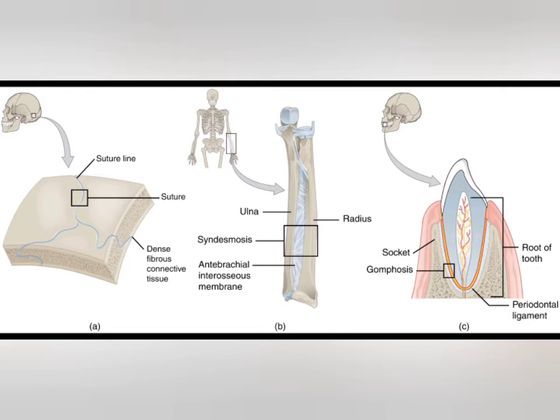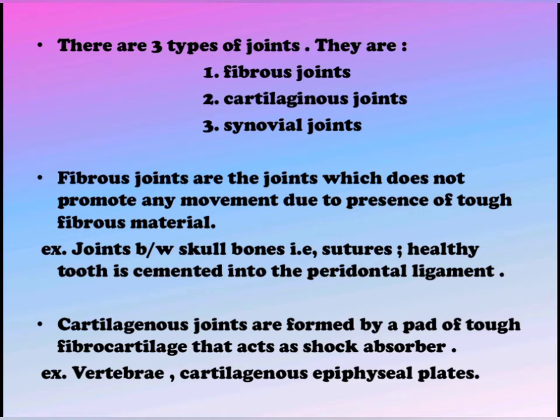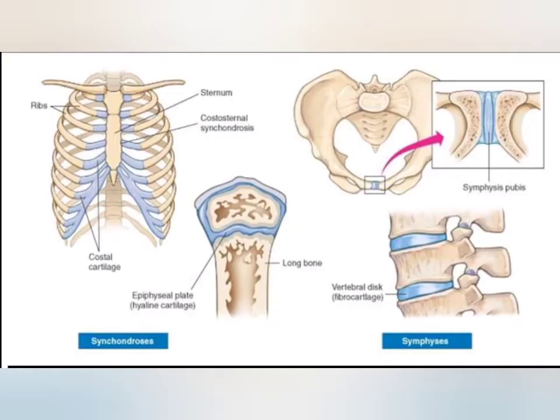Cartilaginous joints are formed by a pad of tough fibrocartilage that acts as a shock absorber. The joint may be immovable, as in the cartilaginous epiphyseal plates, which in the growing child links the diaphysis of a long bone to the epiphysis. Some cartilaginous joints permit limited movement, as between the vertebrae, which are separated by the intervertebral discs.